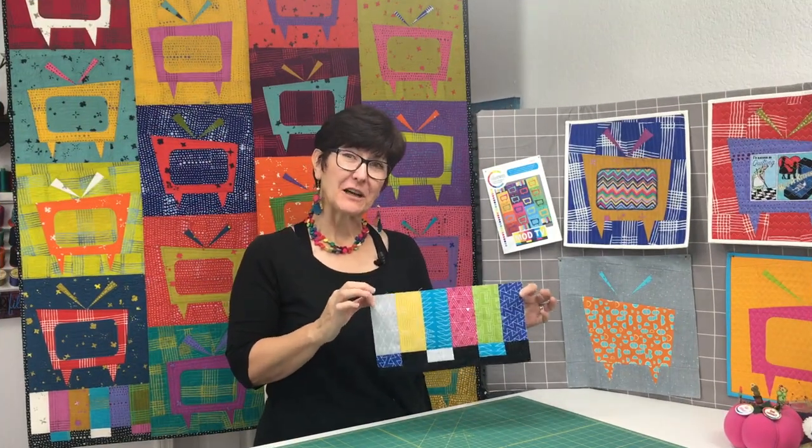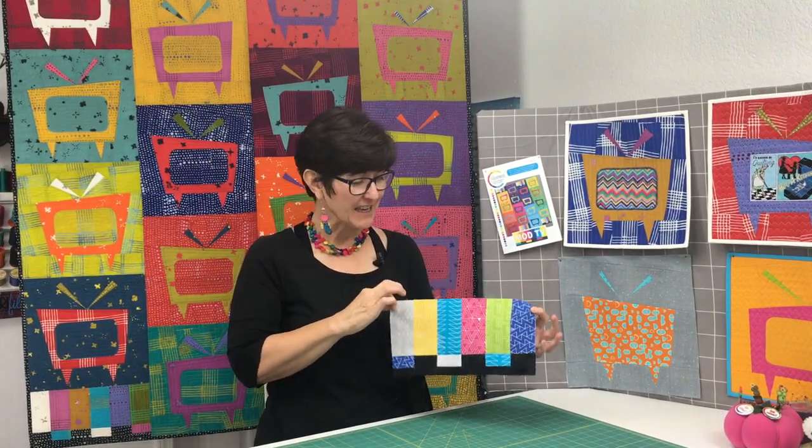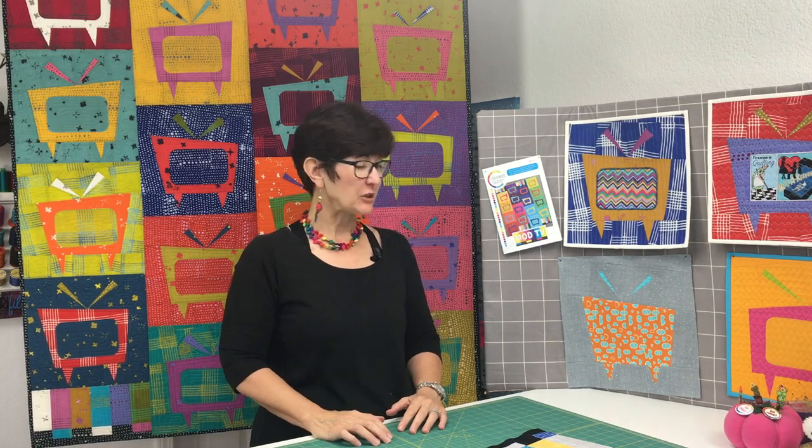So here's our cute color bar blocks all done, and they came out great, and they're very fun to do. That is it for week number three of the Mod TV Quilt Along. Next week I'm going to show you how to personalize your TV screen by adding a photo or a piece of licensed fabric or something that you can fussy cut from your stash. Until then, happy quilting everybody, keep on sewing, and we'll see you here next week.